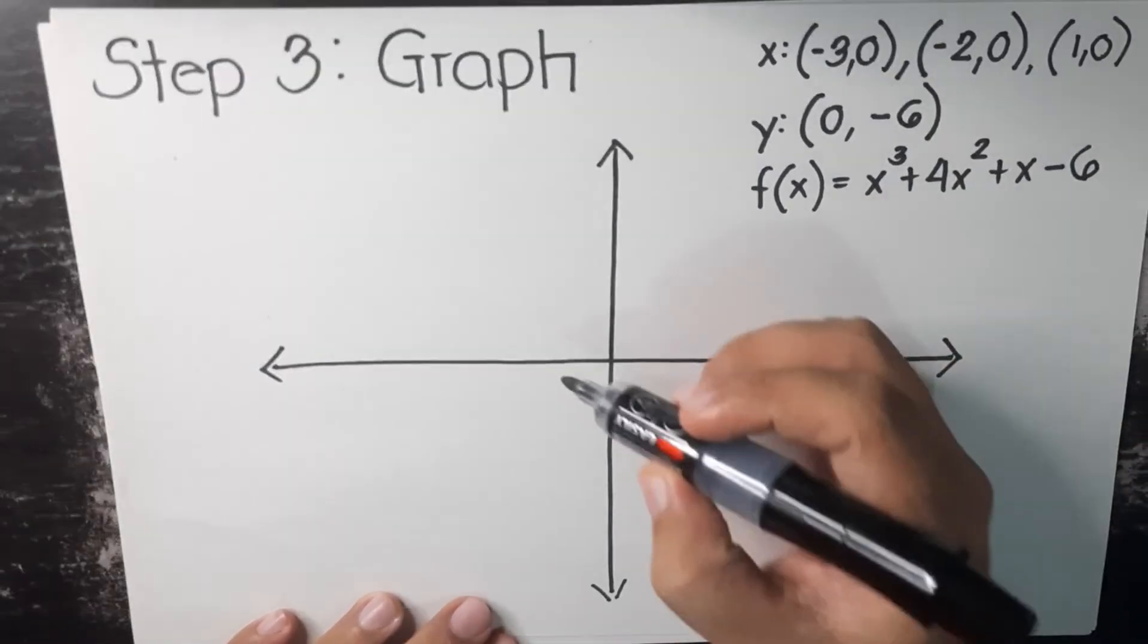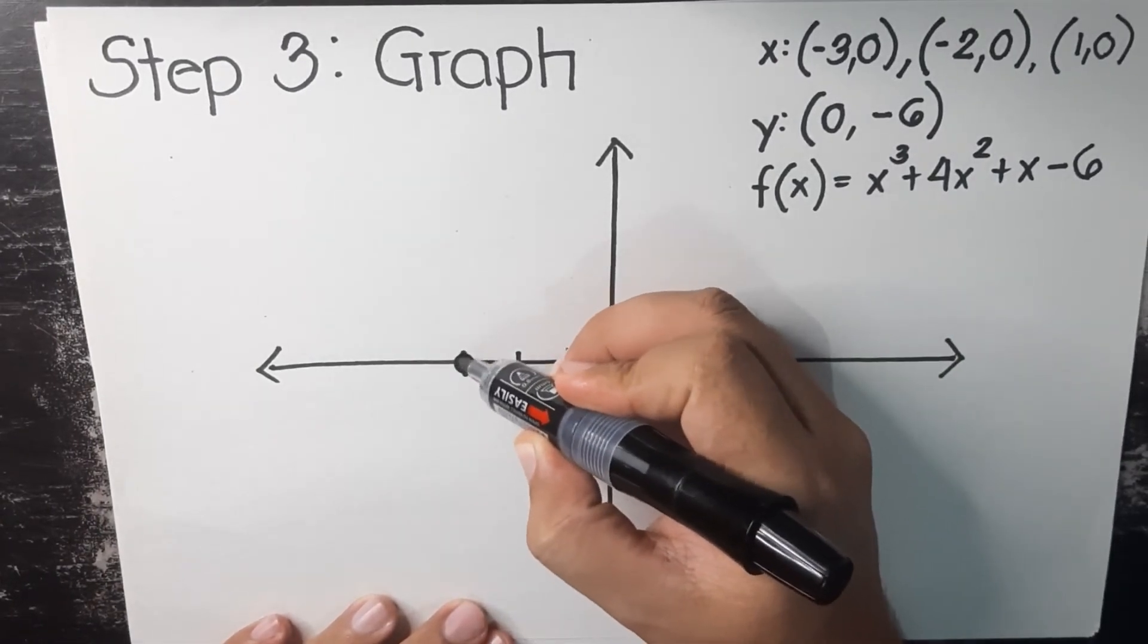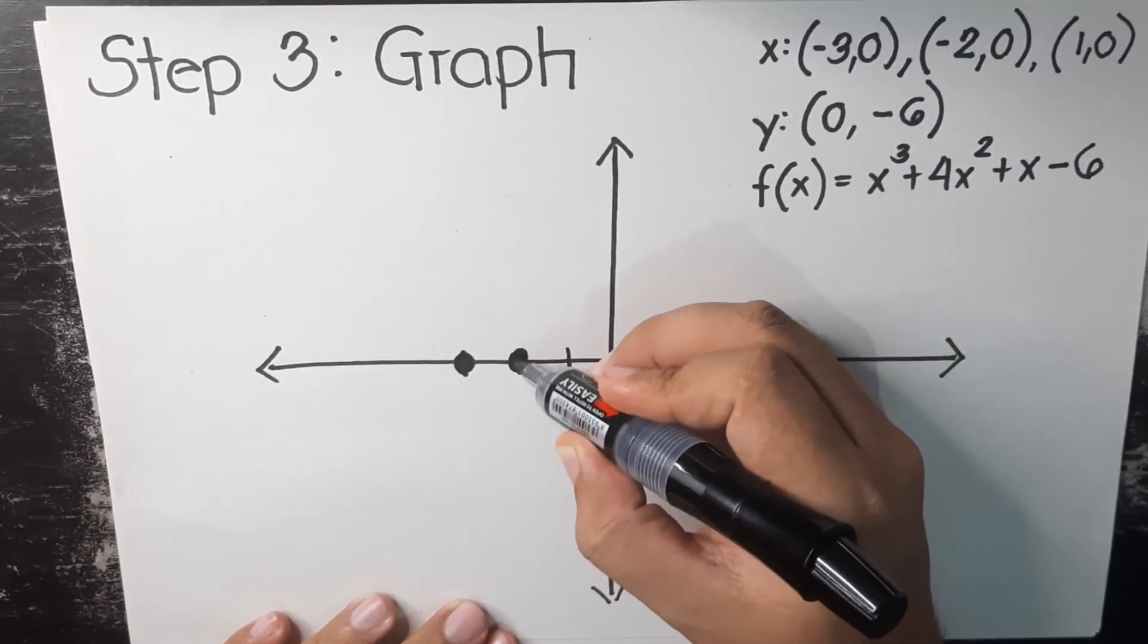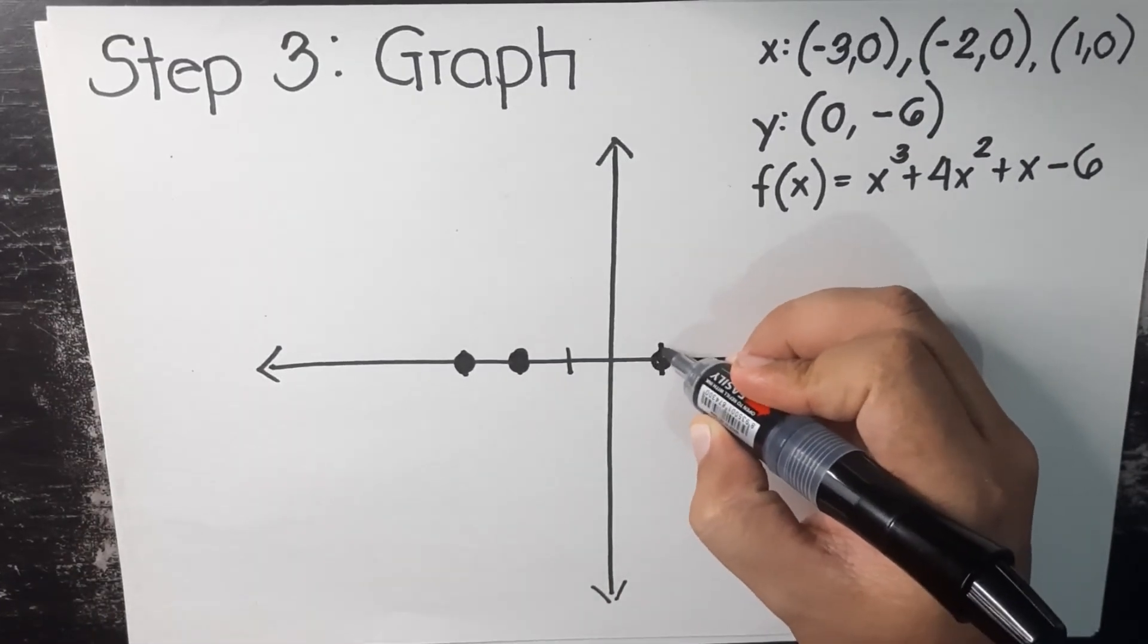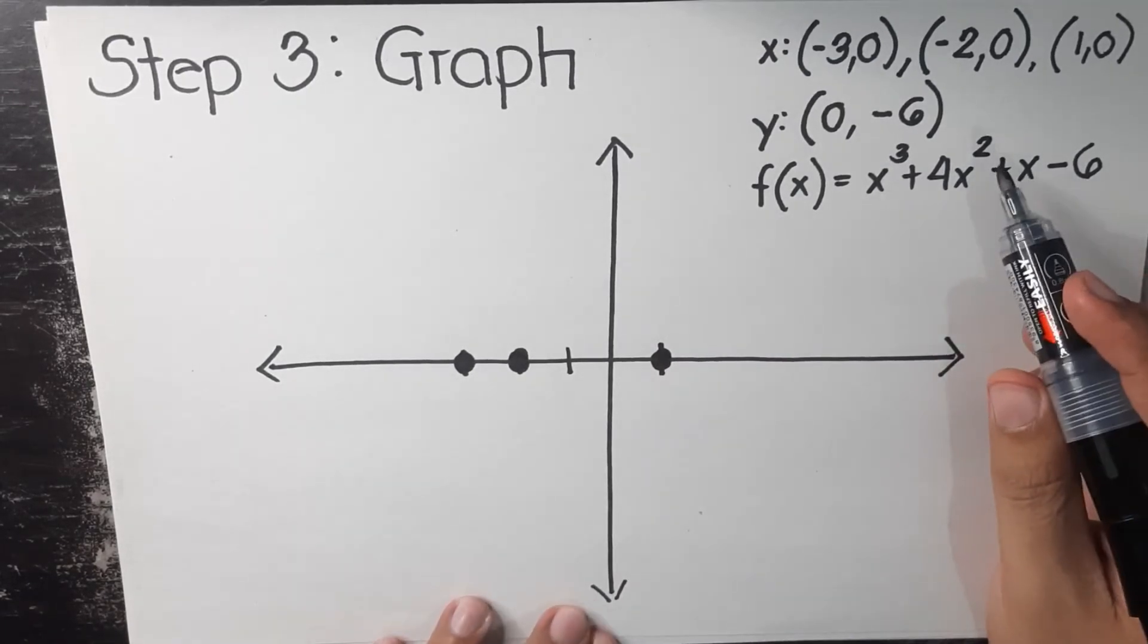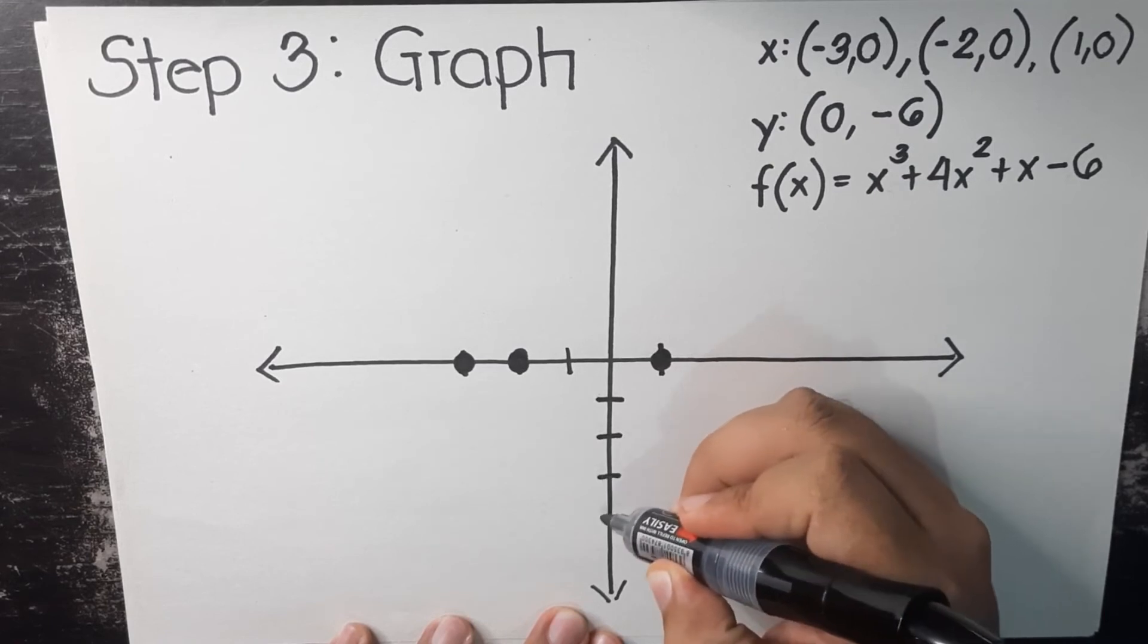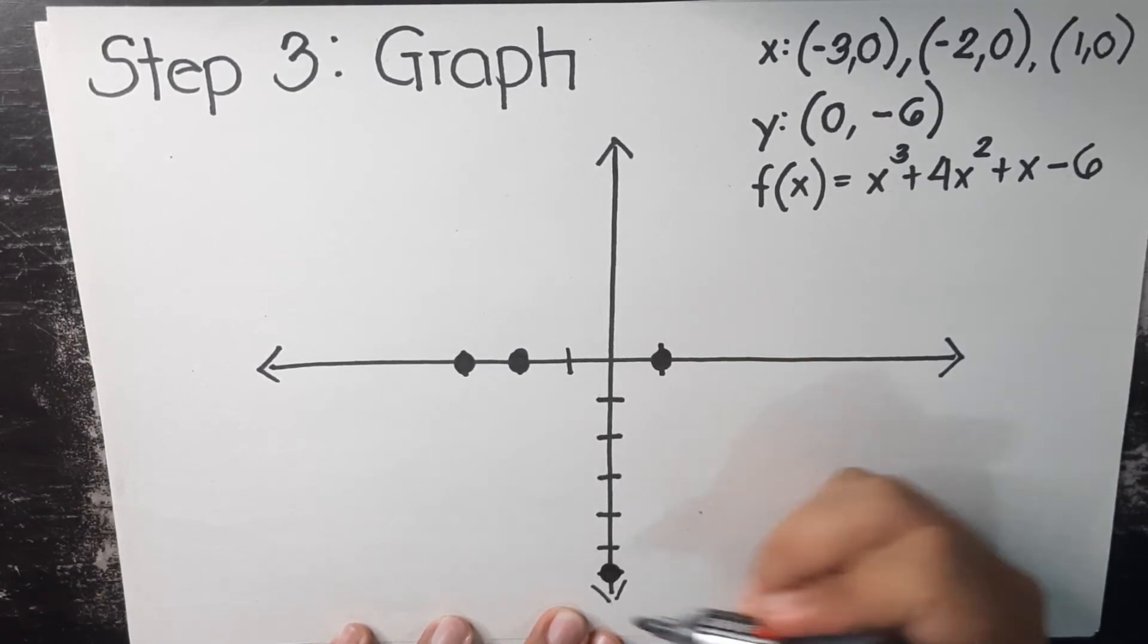Negative three, zero. Negative two, zero. Positive one, zero. And we will also plot our given y-intercept, zero, negative six. Since it's negative, we're going down. One, two, three, four, five, six. So (0, -6) is right here.